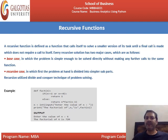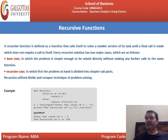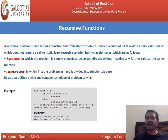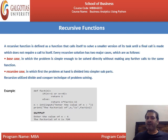Every recursive solution has two major cases. The first is the base case, in which the problem is simple enough to be solved directly without making any further call to the same function. The second is the recursive case, in which the problem at hand is divided into smaller subproblems. Recursion utilizes the divide-and-conquer technique of problem solving.